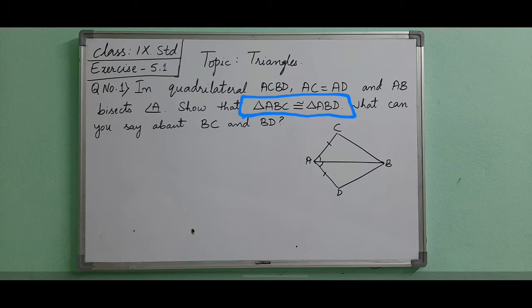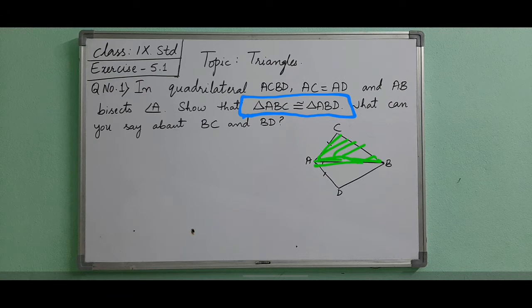We also need to find what we can say about BC and BD. So there are two things to do: first, prove both triangles are congruent. The two triangles given are triangle ABC — the upper triangle — and triangle ABD — the lower triangle.